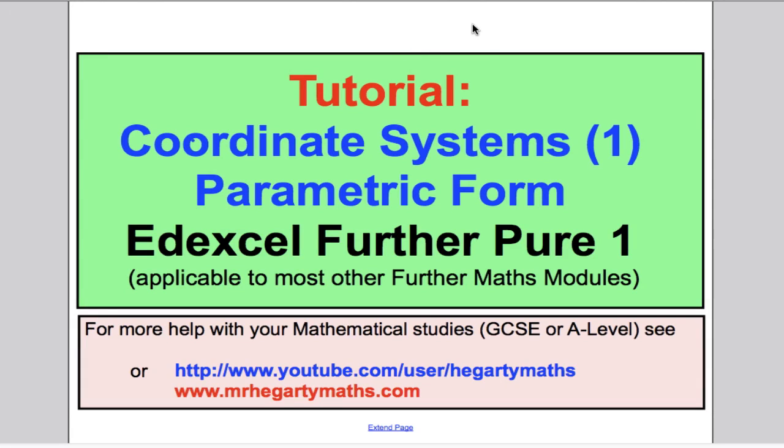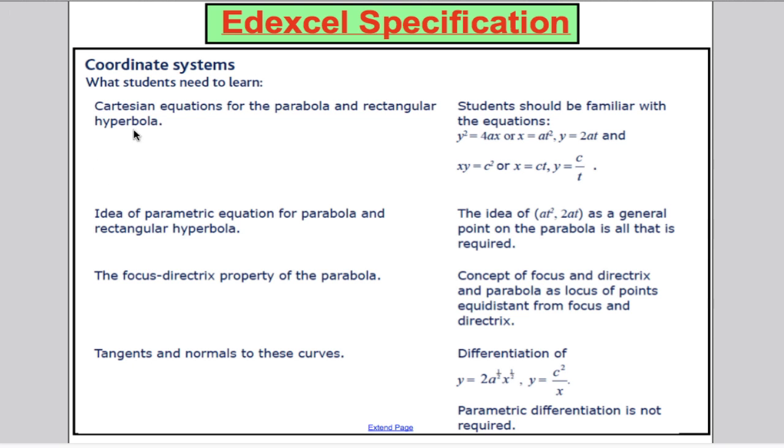Hi there and welcome to another video for the Edexcel Further Pure One Math Syllabus. In this video we're going to start the chapter on coordinate systems and talk about what parametric form is. Looking at the scheme of work, there's a fair amount we have to do in this chapter. The first thing we need to get our heads around are the Cartesian equations for a parabola and the parametric equation for a parabola. In order to do that, we need to have an understanding of what Cartesian and parametric means.